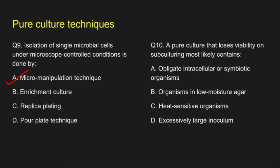Question 10. A pure culture that loses viability on subculturing most likely contains — A. Obligate intracellular or symbiotic organism, B. Organism in low moisture agar, C. Heat sensitive organism, D. Excessively large inoculum. The correct answer is option A: Obligate intracellular or symbiotic organism.